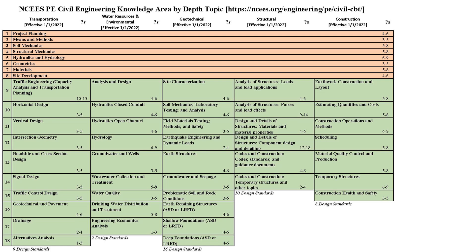Currently, if you take the civil engineering PE exam, you choose between five disciplines: transportation, water resources and environmental, geotechnical, structural, and construction. Regardless of which discipline you choose, every civil engineering examinee takes the same eight topics in the breadth portion — the first 40 problems of the 80 problems on the exam.